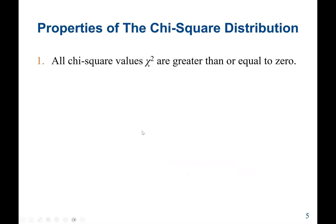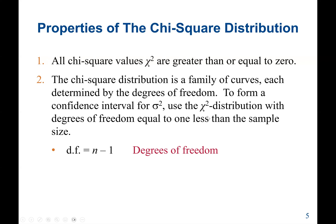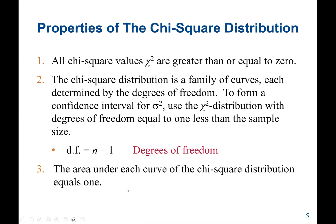The properties of a chi-square distribution: first, all chi-square values are always greater than or equal to 0 — a chi-square value cannot be negative. Also, the chi-square distribution is a family of curves, each determined by the degrees of freedom. To form a confidence interval for the population variance, we use the chi-square distribution with degrees of freedom equal to N minus 1. Then we can find the area under each curve, which equals 1.